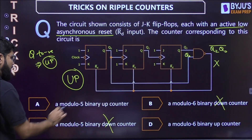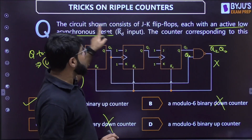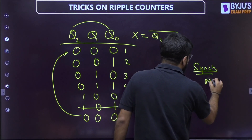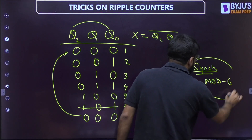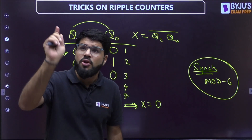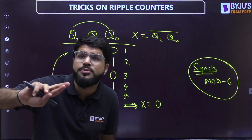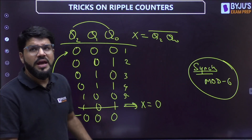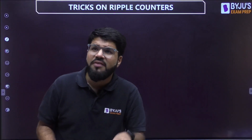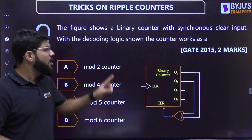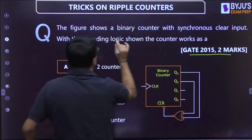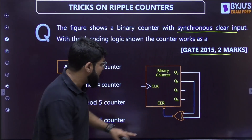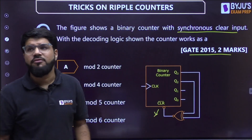Counting the valid states: 000, 001, 010, 011, 100 — that is five states, making it a modulo 5 up counter. State 101 is not counted since it resets asynchronously. If it were a synchronous reset instead, the flip-flops would reset on the next clock edge, meaning 101 would persist for one clock cycle, giving six states — making it a modulo 6 counter. So the key distinction is asynchronous versus synchronous reset.